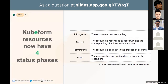Kubeform resources now have four phases. 'In Progress' means the resource is currently in the reconciling process. 'Current' means the resource was reconciled successfully and the corresponding cloud resource is updated. 'Terminating' means the resource is currently in the process of being deleted. And 'Failed' means the resource has encountered some kind of error while reconciling.